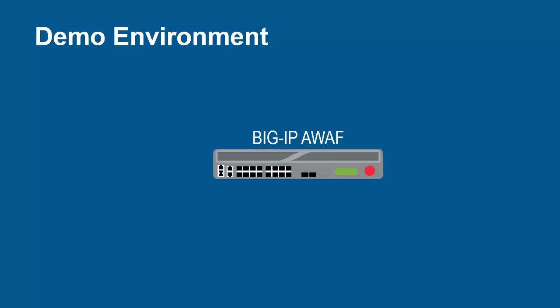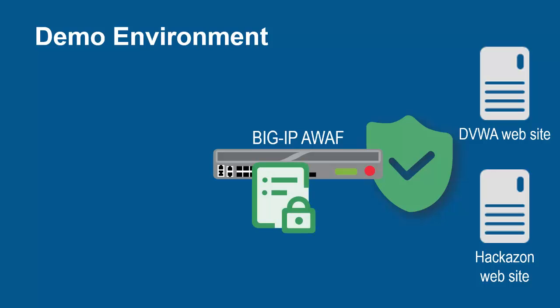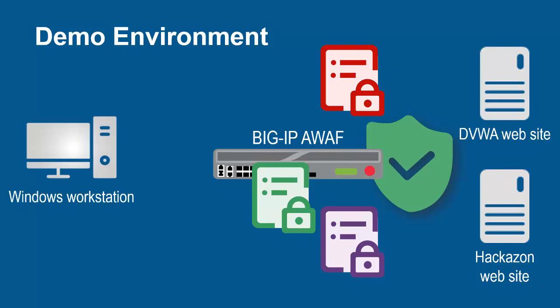The environment for this demo contains four devices. We have an F5 BigIP System running Advanced WAF. The BigIP System sits in front of, and protects, two backend web applications. We'll be using BigIP Advanced WAF to manage a parent security policy, which contains several application security settings. The parent policy will be used to create two child security policies, one for each web application. And finally, a Windows workstation will be used to submit requests to the two web applications.